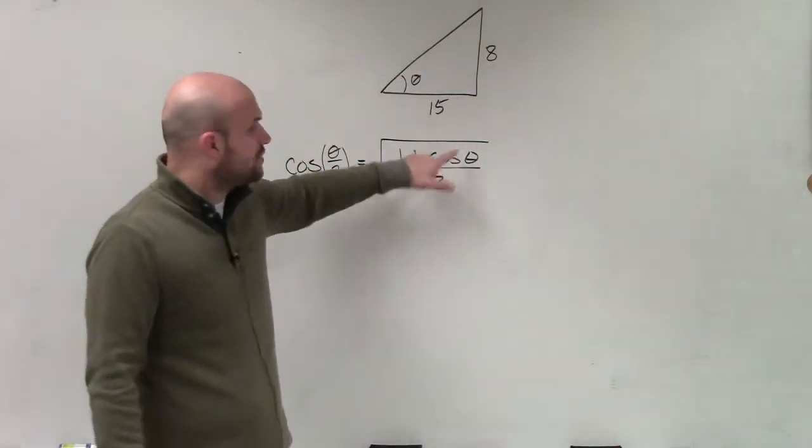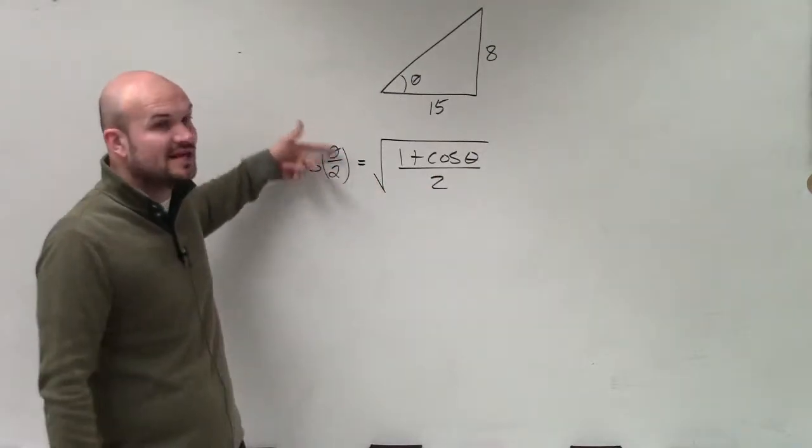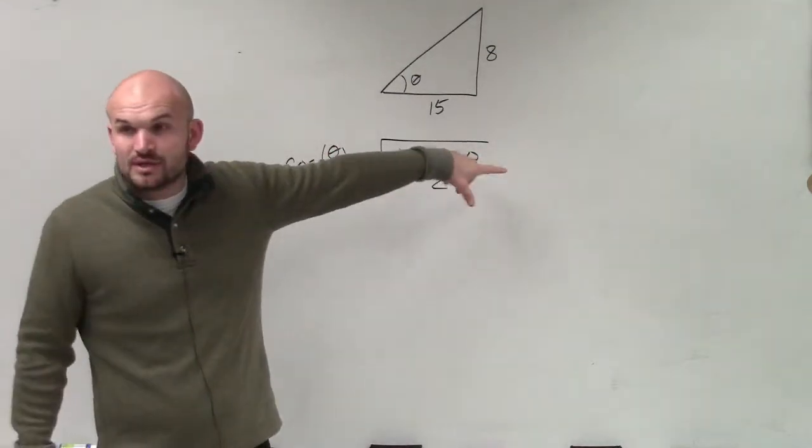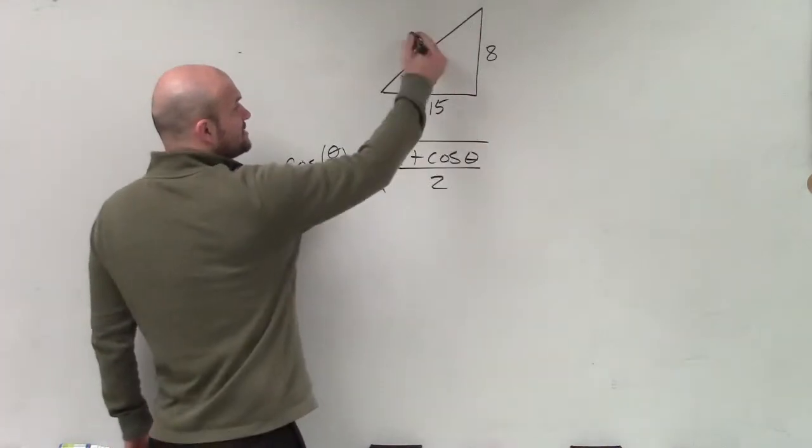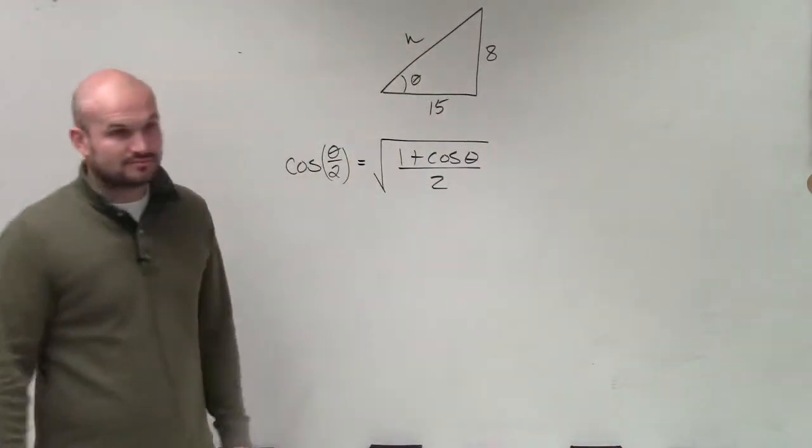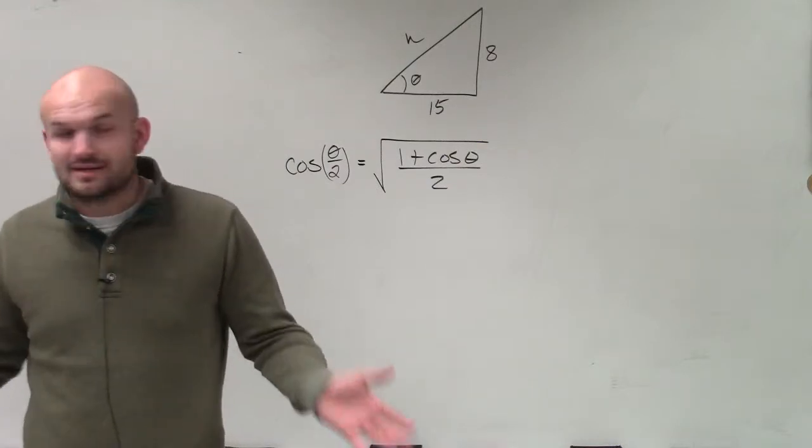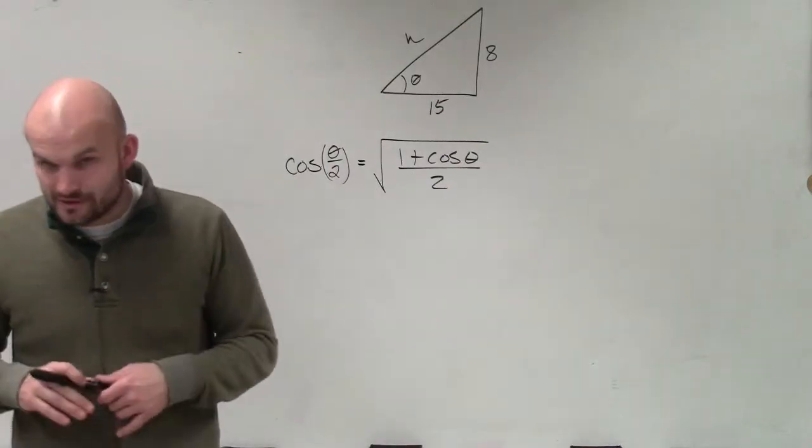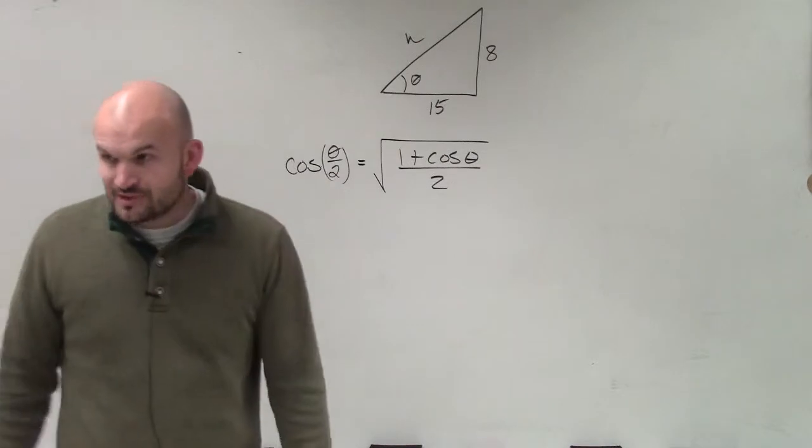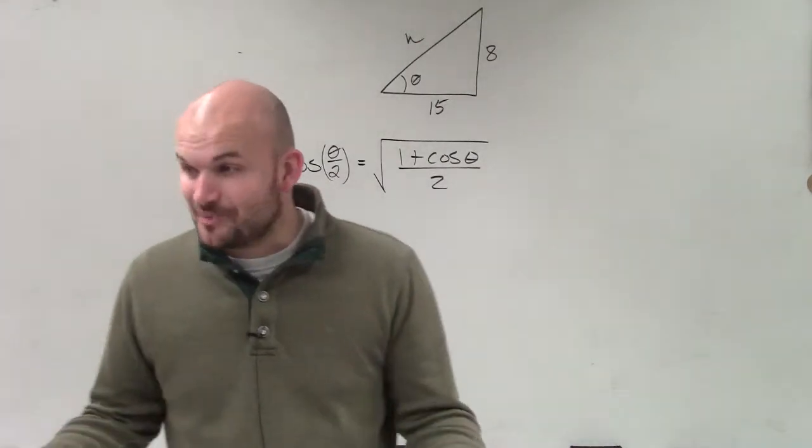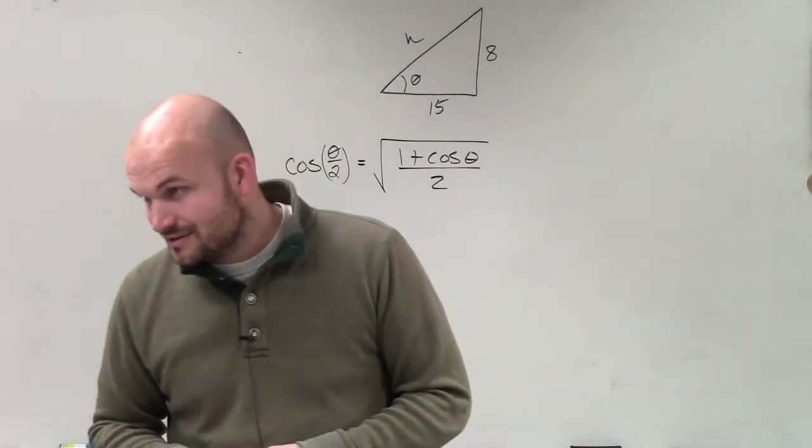But anyways, so now I need to evaluate the cosine of theta. To evaluate cosine of theta divided by 2, I need to know what cosine of theta is, which would be adjacent over hypotenuse. But the problem is we don't know what the hypotenuse is, so we need to use Pythagorean theorem. Hopefully you guys should know your Pythagorean triple and you can determine that it is 17.